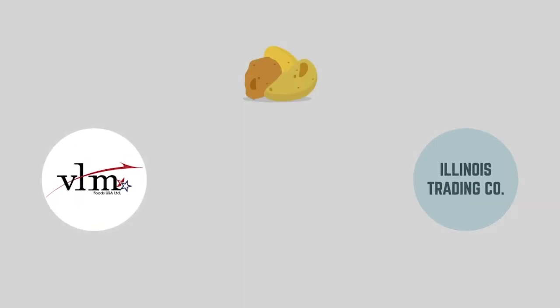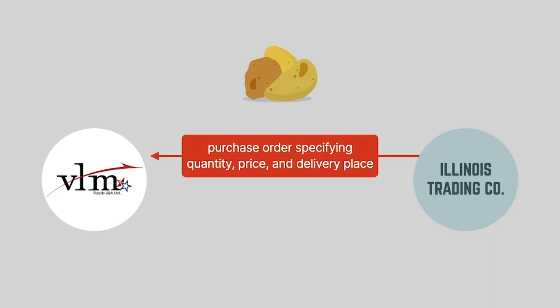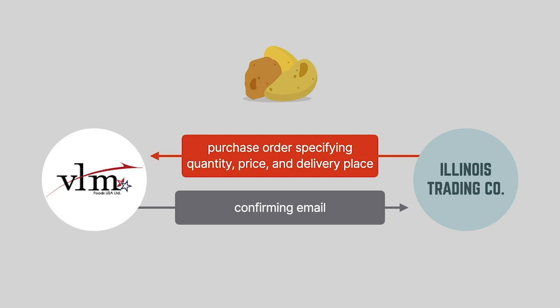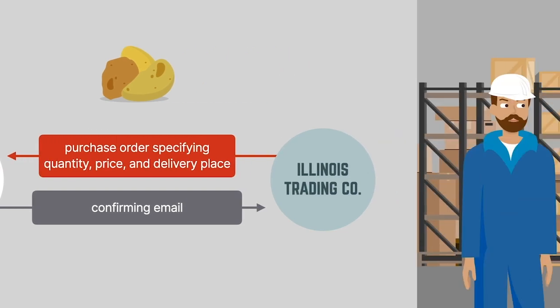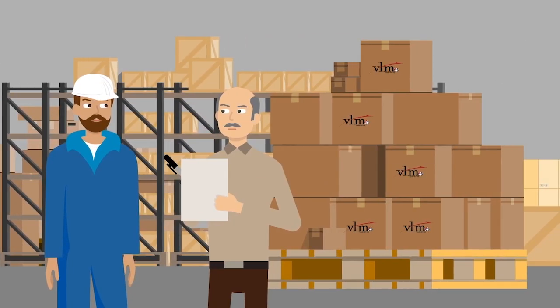Illinois Trading bought frozen potatoes from VLM in multiple separate transactions. Each time, Illinois Trading sent a purchase order to VLM specifying the quantity, price, and delivery place, and VLM responded with a confirming email. VLM then shipped the potatoes to Illinois Trading, which in turn accepted them.